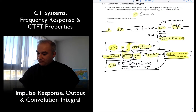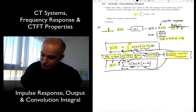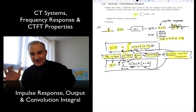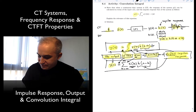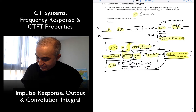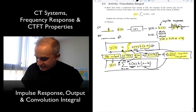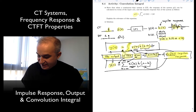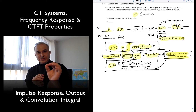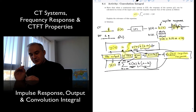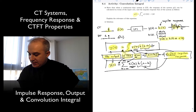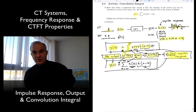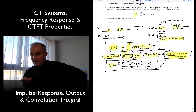In continuous time we use the Dirac delta function. In discrete time it's easier even — x(n) is zero everywhere except at one point where it is one. So the discrete impulse is zero, zero, zero, one, zero, zero — not infinity — and you get the impulse response, and with this we can find the output.